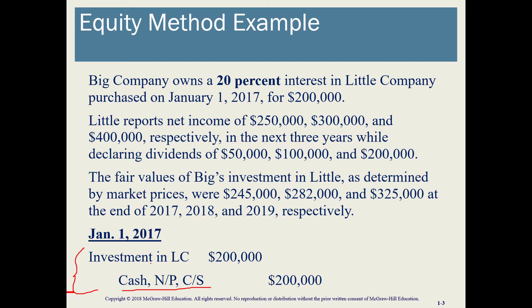We debit the investment in Little Company for $200,000 and the consideration paid. This consideration paid could be in cash, could be debt, or it could be stock, so pay attention to that — don't always assume it's going to be cash. We're also told that Little has reported income for the next three years, and we're given the amount of that income as well as the dividends that were paid to shareholders.